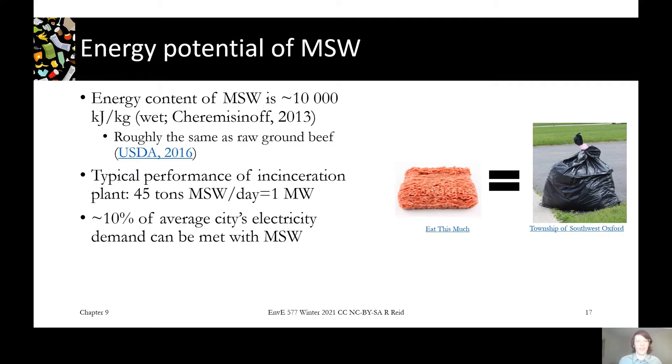A typical heating value for waste is around 10,000 kilojoules per kilogram, and that is about the same as raw ground beef. If you think of raw ground beef being marketed, especially in Canada, it's like something for big, strong, healthy people. You can think of waste as something for big, strong, healthy thermal treatment plants. There's a lot of energy in that waste, just as much value to a thermal treatment plant as a hamburger would be to us. Incinerators typically handle around 45 tons of waste per day, which would produce about a megawatt of energy, which is around 10 percent of an average size city's electricity demand.